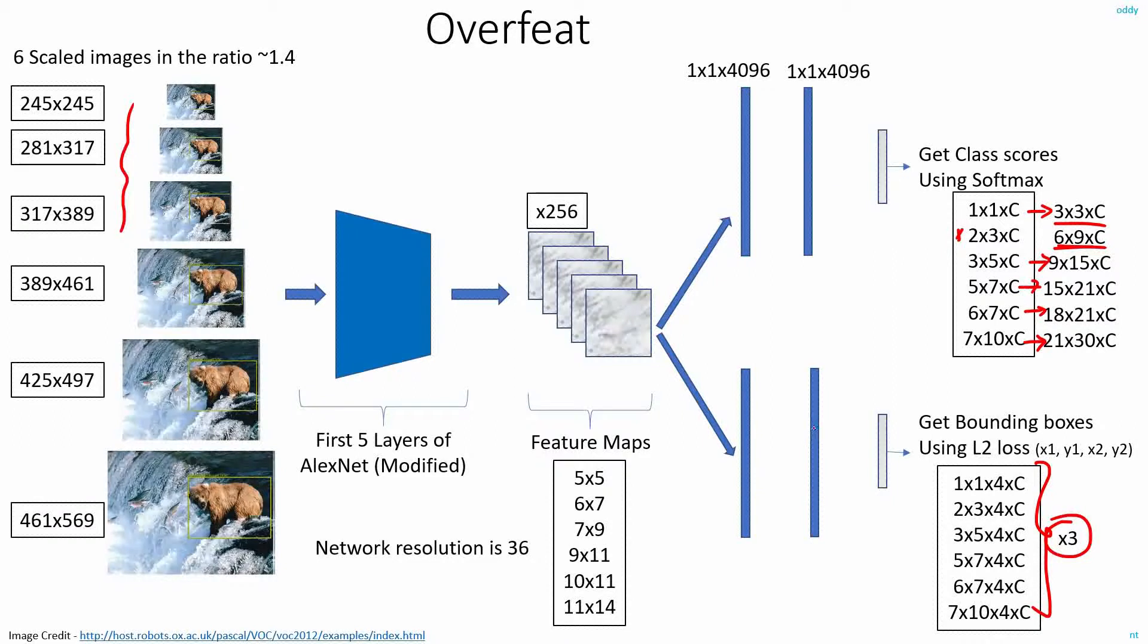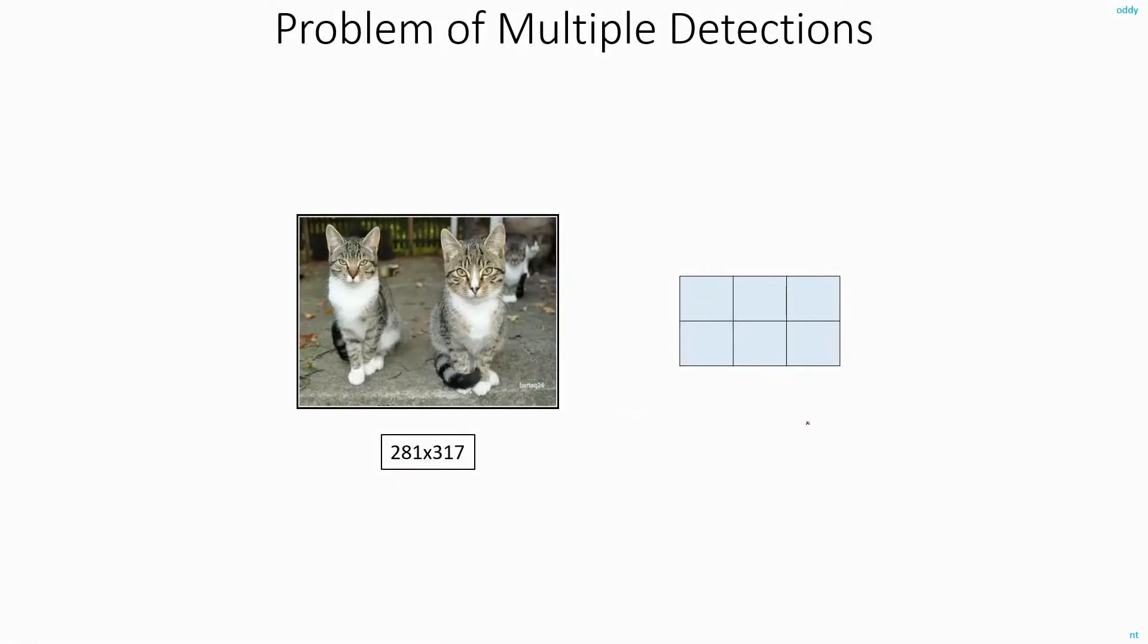That's the last topic left to discuss about OverFeat. Finally, this is a very generic topic. When you are doing object detection, you will end up with multiple detections for a single object. For example, if you consider the image dimension of size 281 by 317, where you are getting a 2 by 3 spatial output in the normal case with a resolution of 36.